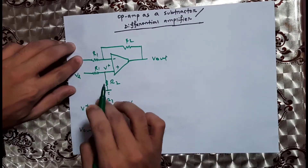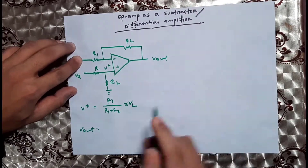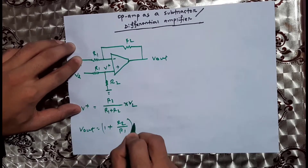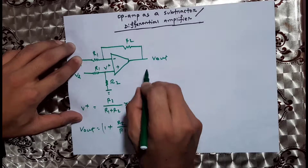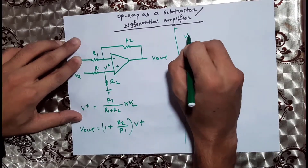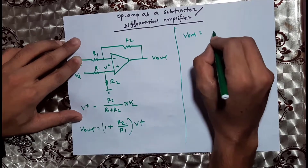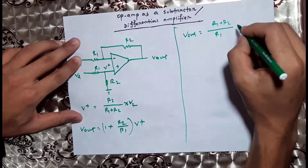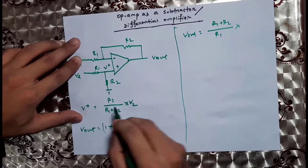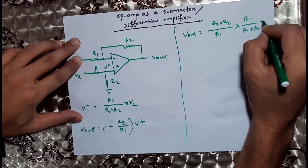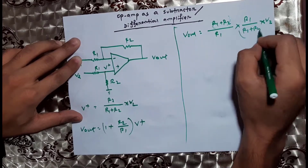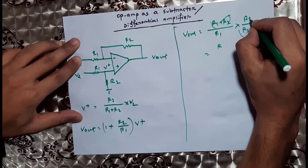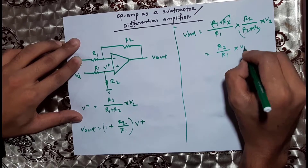If we work through the mathematics, the output is equal to 1 plus R2 divided by R1, multiplied by V-plus. Then V-out is determined by the voltage divider and the gain. Working through the algebra, we get R2 divided by R1 multiplied by V2, which gives us R2 divided by R1 into V2.